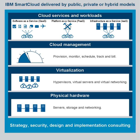With the machine partitioned into separate VMs, mainframes could run multiple applications and processors at the same time, making the hardware more efficient and cost-effective. IBM began selling VM technology for the mainframe in 1972.